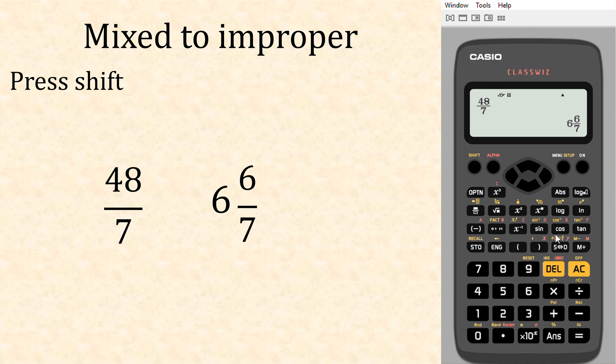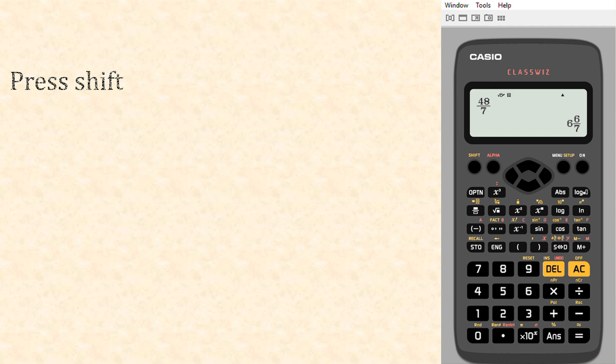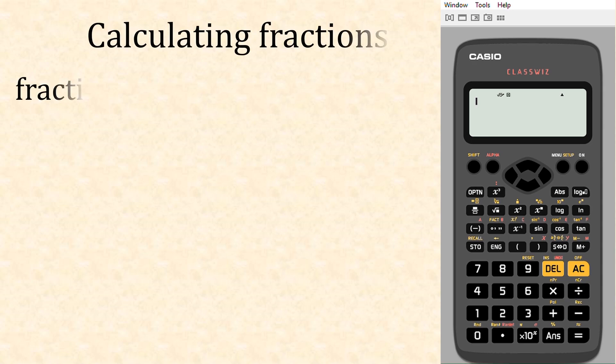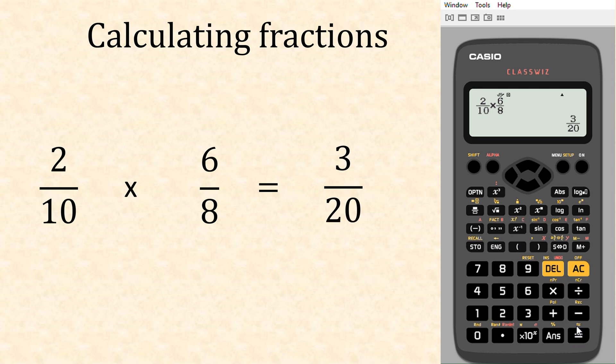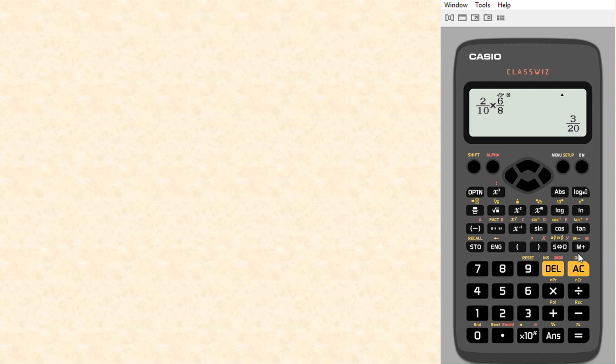Let's do some calculations. Let's put in a fraction—let's have two, put that in, arrow down, over 10. Now we're going to multiply this, so we need to arrow across to get in our multiply, and then fraction button again, six at the top, arrow down, eight at the bottom. We must arrow across here before we hit equals, and that gives us three twentieths. Lovely.